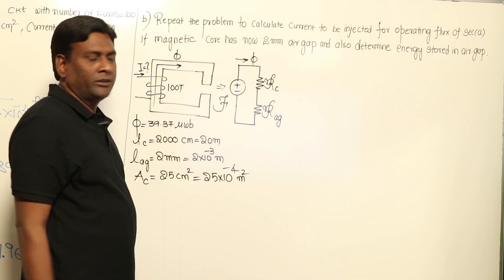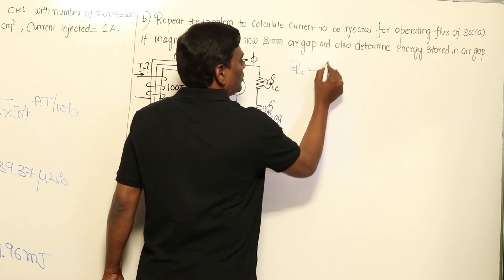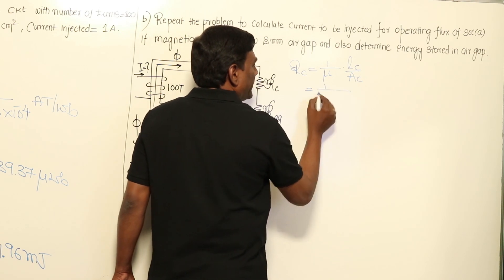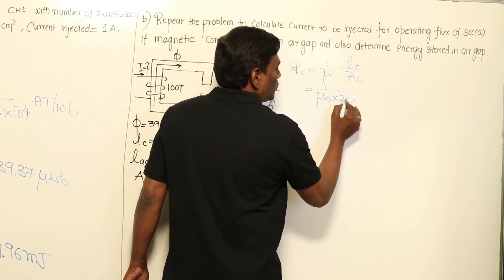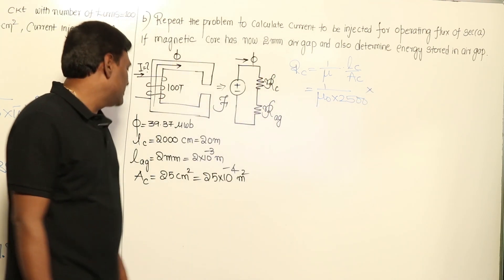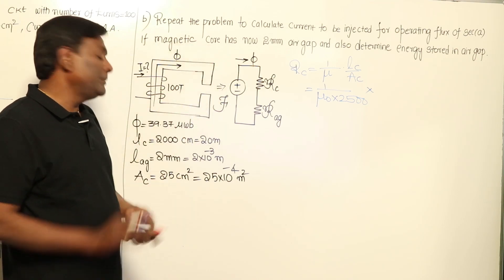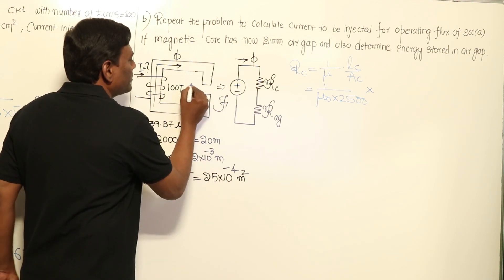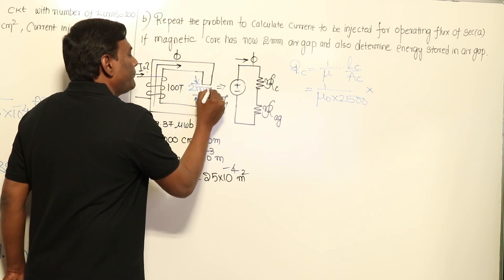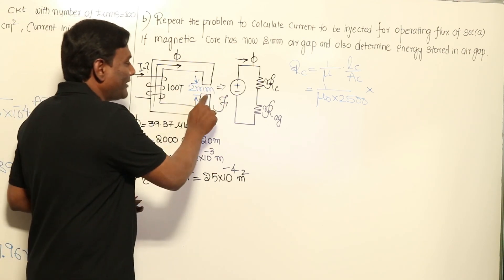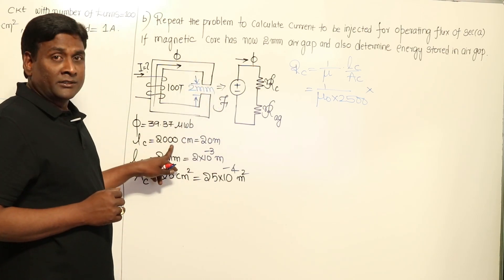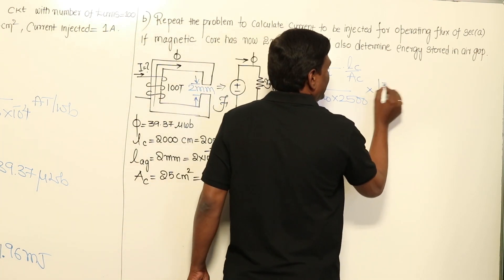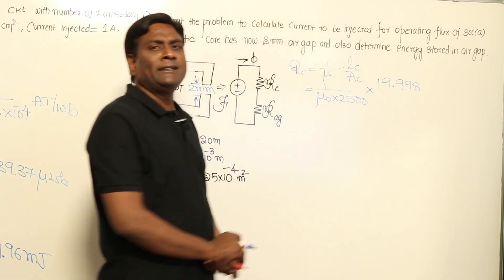Reluctance of core = l_core / (μ₀ × μᵣ × A) = 1/(4π × 10⁻⁷ × 2500) × l_core / (25 × 10⁻⁴). The total core length is 2000 centimeters = 20,000 mm. With a 2 mm air gap removed, the core length becomes 19,998 mm = 19.998 meters.